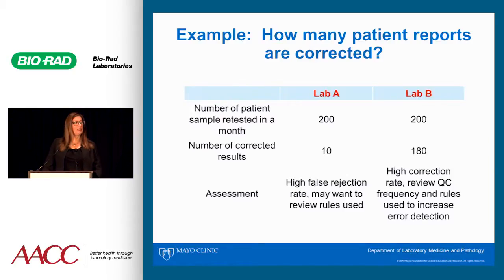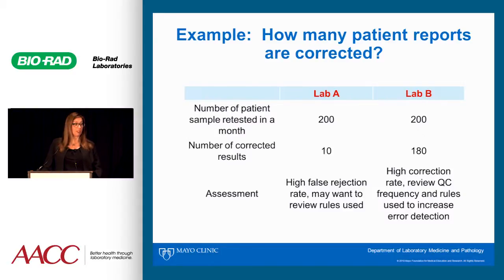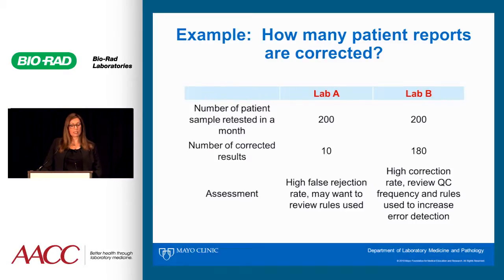However, Lab A only had to correct 10 patient results, while Lab B had to correct 180. If I'm Lab A reviewing this data, I might say I have a high false rejection rate — I'm repeating a lot of patient results when there's an out-of-control condition that don't need revision, and I might want to review the QC rules I'm using. If I direct Lab B, I'd say that's a pretty high correction rate, and I might want to review my QC frequency, my rules, and try to get rules that give me better error detection.